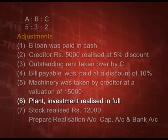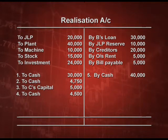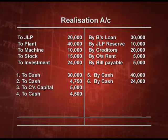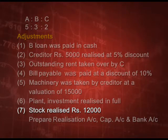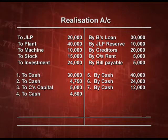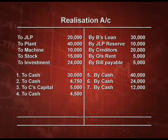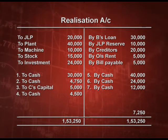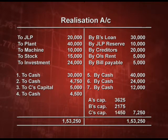Plant realized full value — by cash: plant 40,000 and investment 24,000 credited, which also gets added to the cash account debit side since money is coming in. Stock realized 12,000 — by cash 12,000. Now totaling both sides of the realization account, we get a loss of 7,250, which divided in the ratio 5:3:2 becomes A: 3,625, B: 2,175, and C: 1,450.